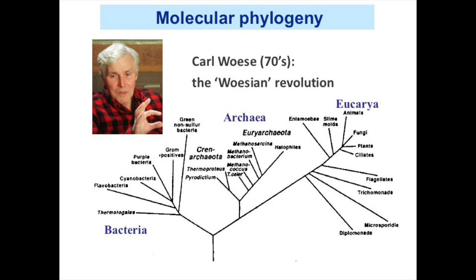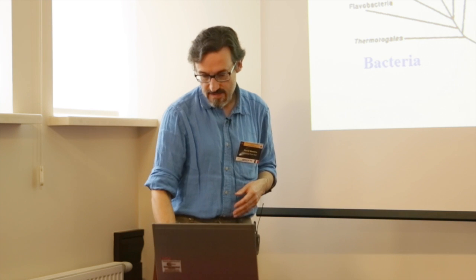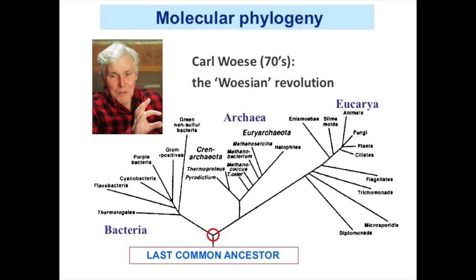Perhaps the first time this idea was applied to the global diversity of living beings was in the 1970s by Carl Woese and colleagues, producing a very famous tree where all living species can be classified into three major groups: bacteria, archaea, and eukaryotes — the three domains of life. In this tree, the last common ancestor is this hypothetical entity located at the deepest node.